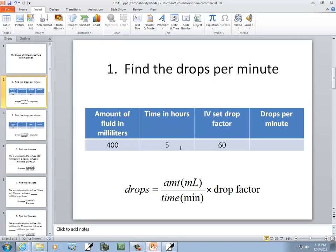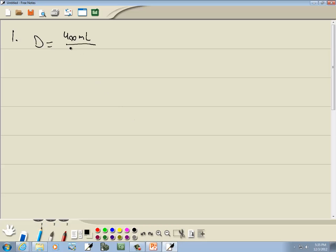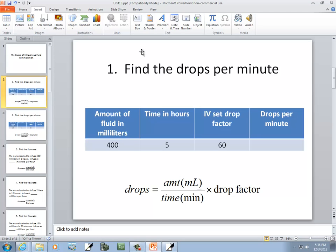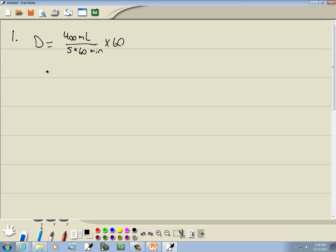And time in minutes, well it's 5 hours, so we're going to take 5 times 60 to put it into minutes, because this is drops per minute. We don't want drops per hour. And then times our drop factor. They tell us drop factor in this problem is 60, so take that times 60.